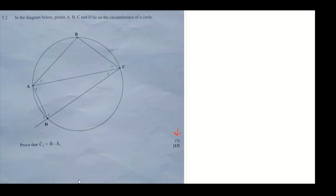So we are given points A, B, C, and D in this circle. They all lie on the circumference of a circle. And we are asked to prove that angle C2 is equal to angle B minus angle A1. So that's what we are required to prove.